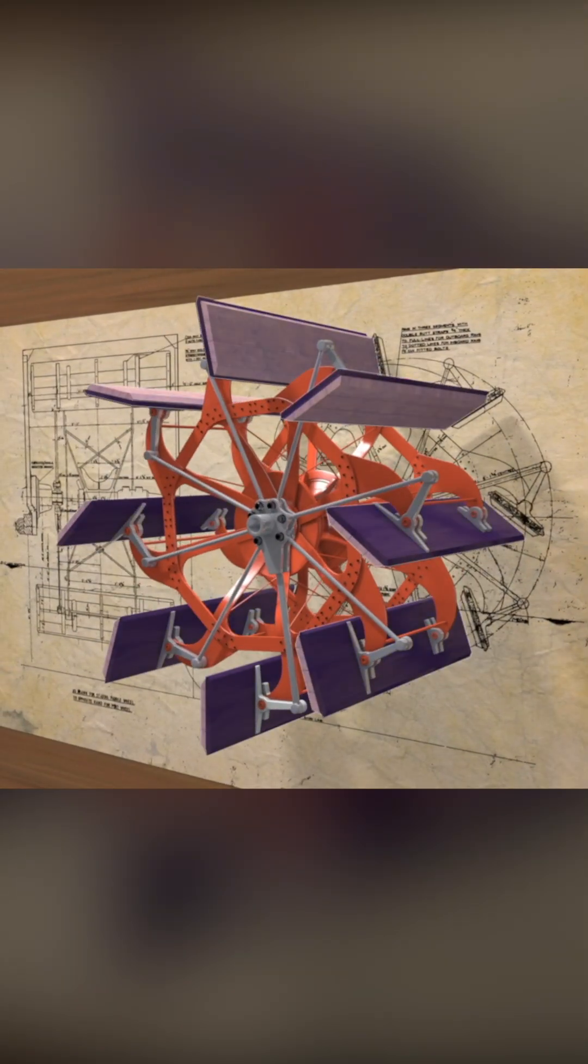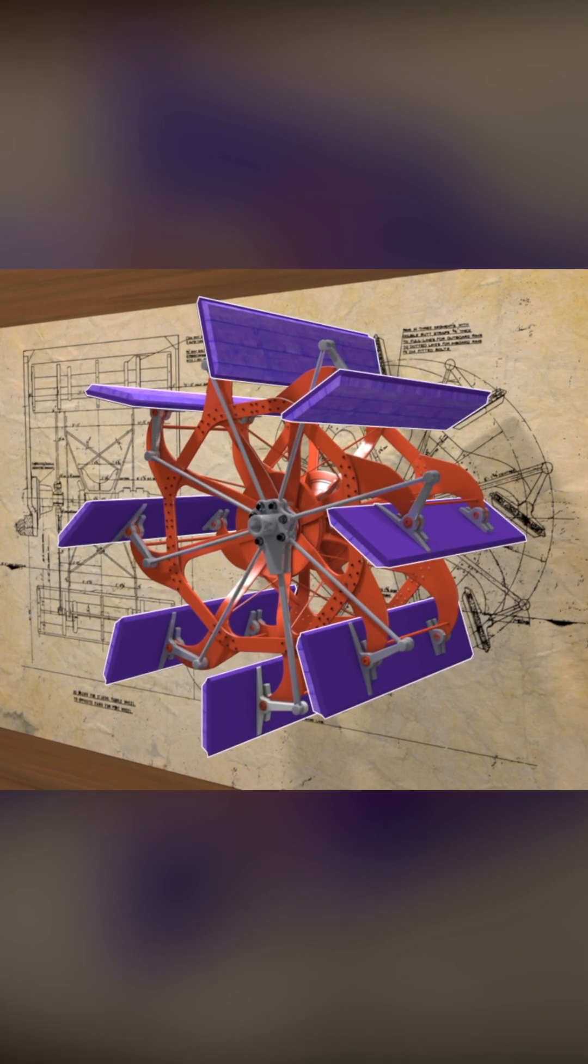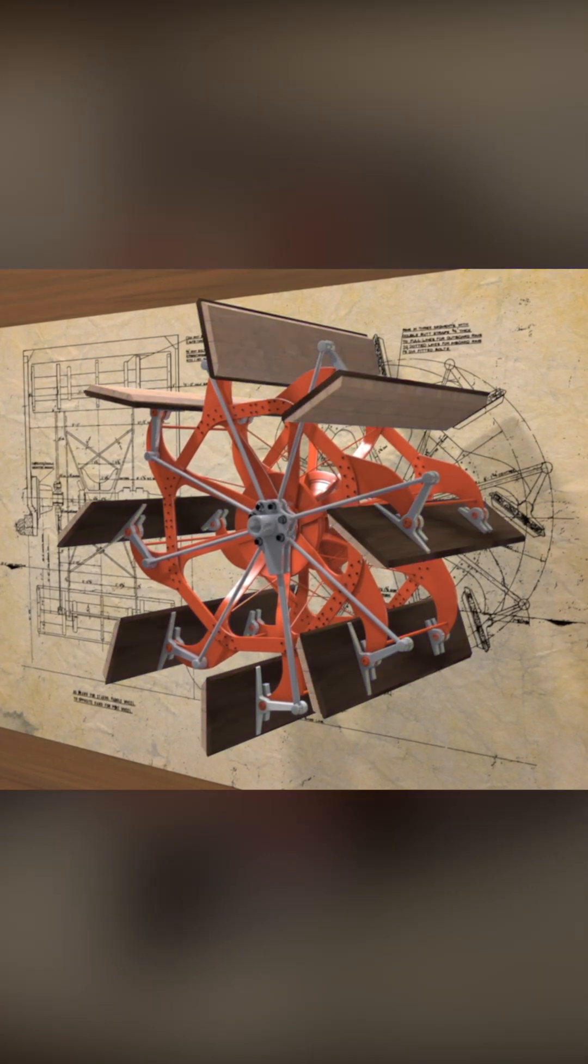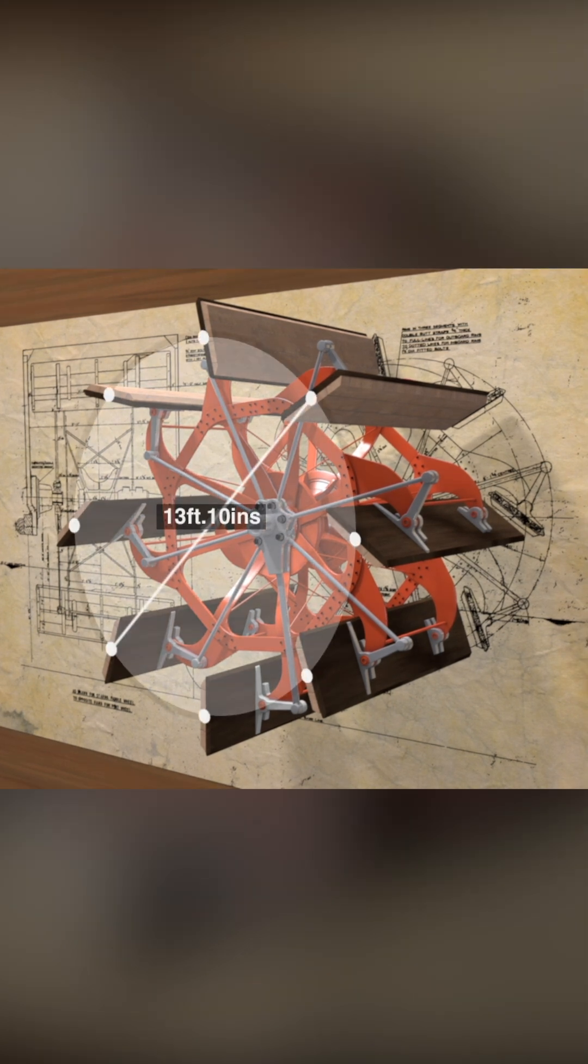The wheels have eight timber paddle floats, each 11 feet wide and 3 feet deep. The diameter of the paddle wheel to the centre of its floats is 13 feet 10 inches.